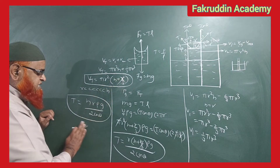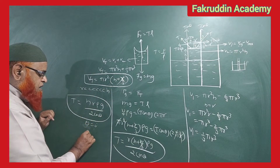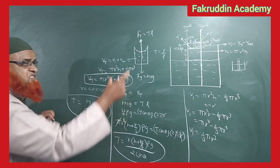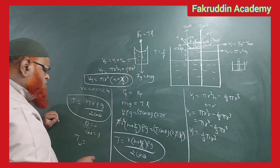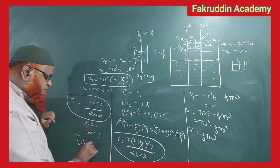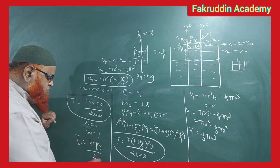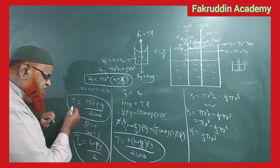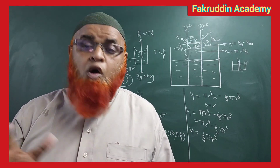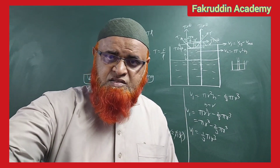For water, theta is considered to be 0 degrees, therefore cos 0 equals 1. So the surface tension acting on water in the beaker can be written as T = h r rho g divided by 2. That's it — this is the formula for surface tension. This is a very simple explanation. Hope you have understood. Thank you very much, have a nice day.